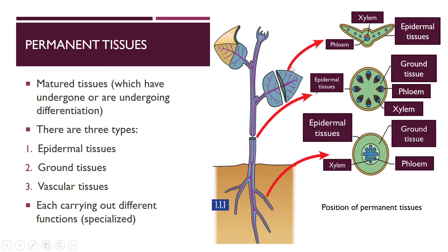This is the cross-section of the leaf. Bila kita bentang macam ini, xylem berada di atas, phloem di bawah. The locations are important — sometimes they will just point at it and ask you to state the function. Ini kerata rentas bagi batang. Epidermal tissues when you cut like this, kamu bentangkan, lihat di bawah mikroskop — this is what you can see, the ground tissue is all over. And then you have phloem di sebelah luar, xylem inside.